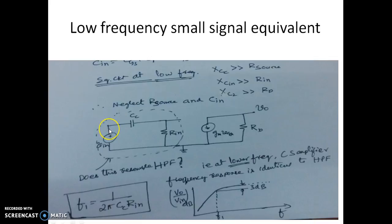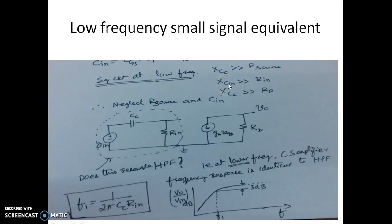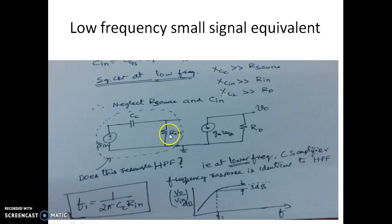We are not considering the series resistance here. Coming to Cin, which is in parallel with Rn — since at low frequencies the reactance offered by Cin is very large compared to Rn, when two resistors are in parallel and one is very high and the other is low, we retain the lower one. So we neglect both the source impedance R_source and Cin.